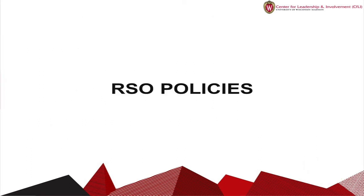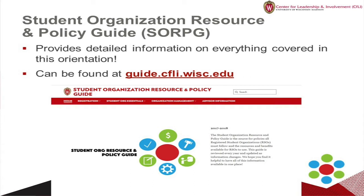Now we will review several important Registered Student Organization, or RSO, policies that you will want to be aware of. Several times throughout this presentation, we have mentioned the Student Organization Resource and Policy Guide. This guide can be found at guide.cfly.wisc.edu and is the definitive source of information for student organizations on campus — consider it the RSO Wikipedia for our campus. We have pulled together information, policies, regulations, and resources from across the campus, city, and state to help your organization be successful. The sections are listed at the top of the page for easy navigation, and both benefits and policies information can be found under the Student Org Essentials tab.